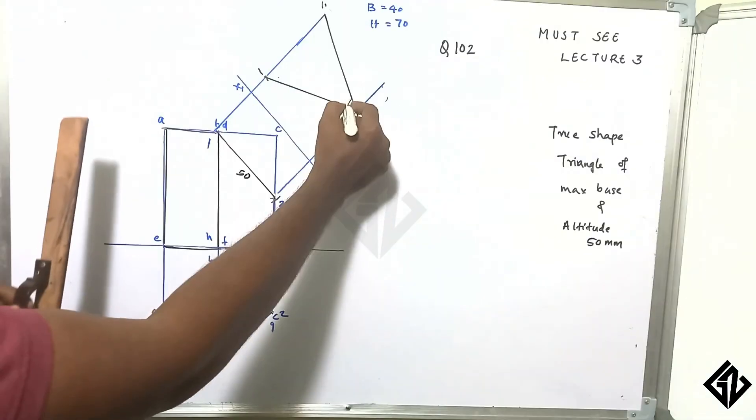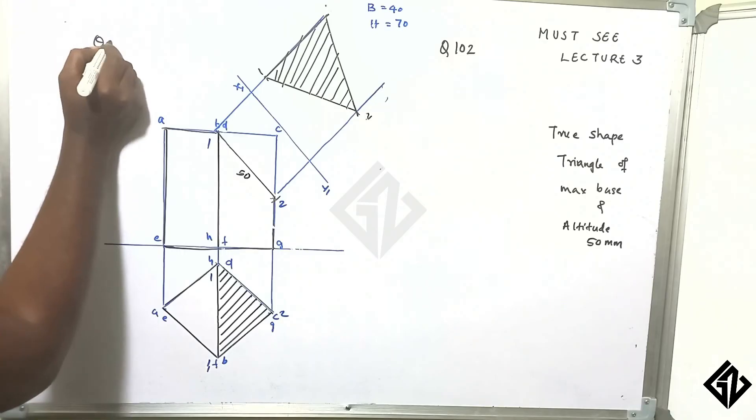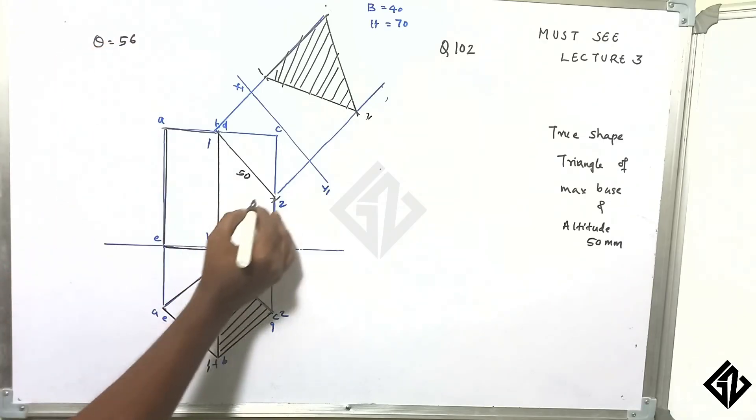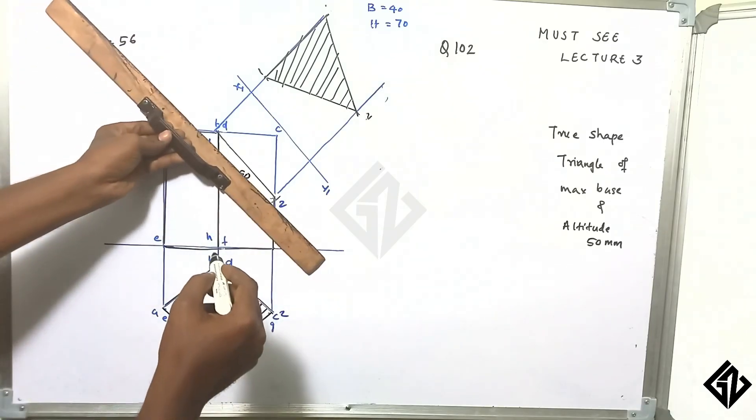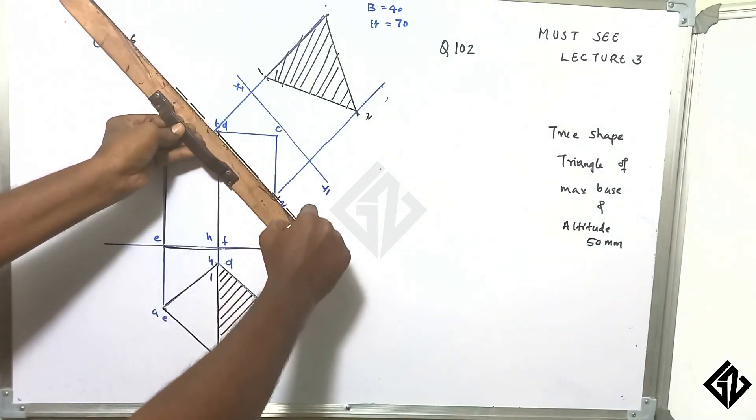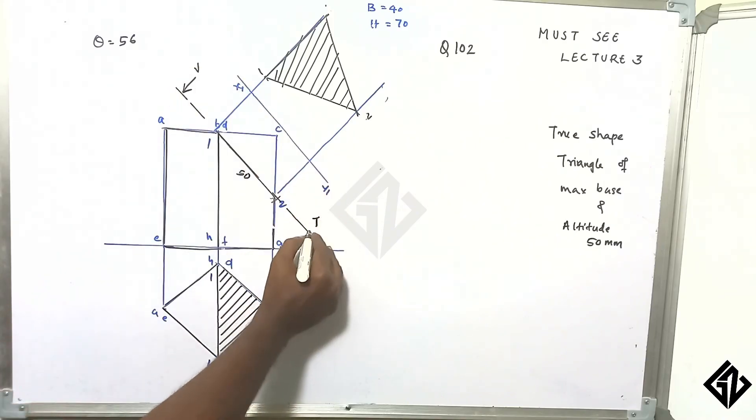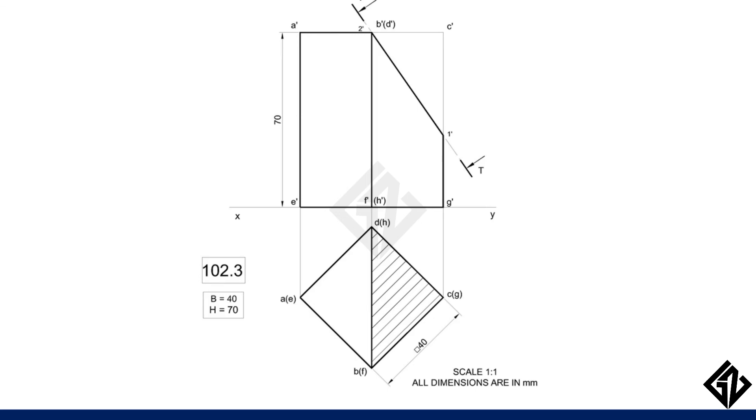If you measure that angle, the theta will be 56 degrees. This is the cutting angle. This will be either another cutting plane or this is your VT. If you measure this angle, this will be your theta, and that theta equals 56 degrees.